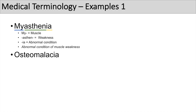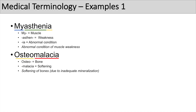The next practice problem is osteomalacia. Breaking it down: 'osteo' means bone, and 'malacia' means softening — which we just learned. So osteomalacia literally means softening of the bones, and it's specifically a softening of the bones due to inadequate mineralization.